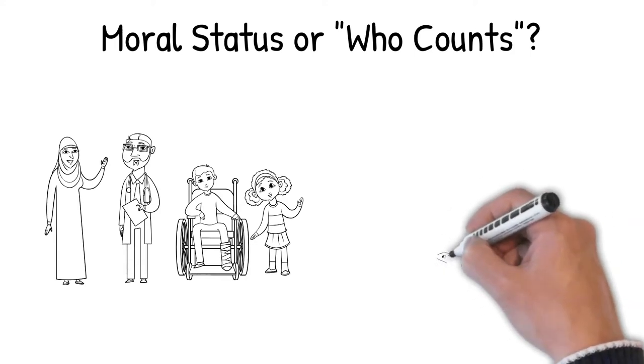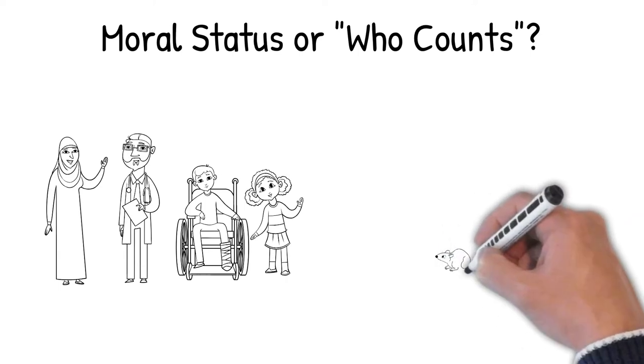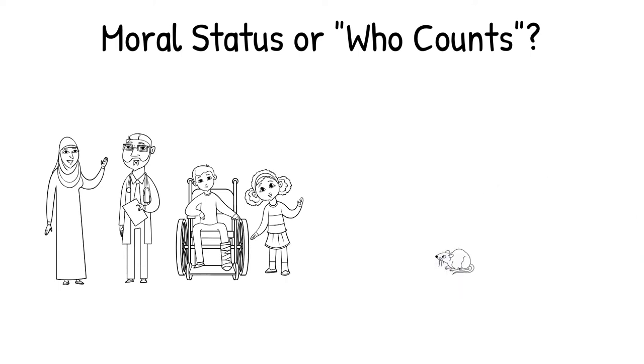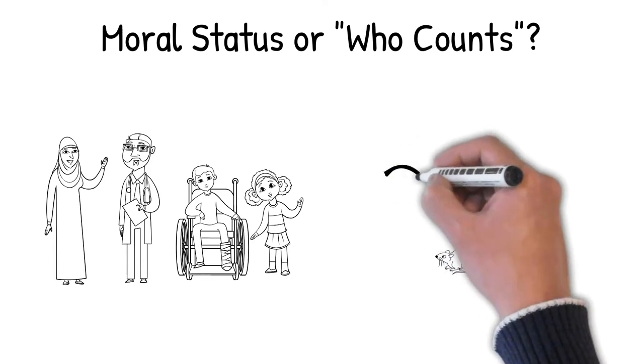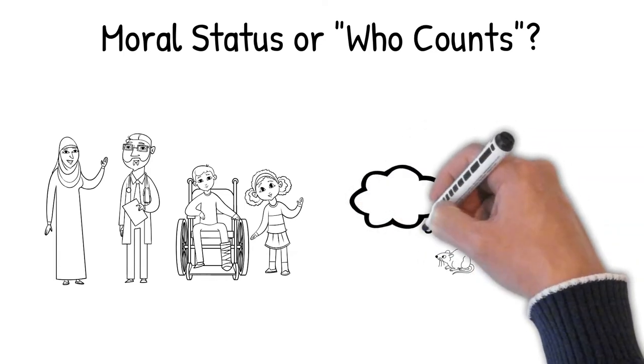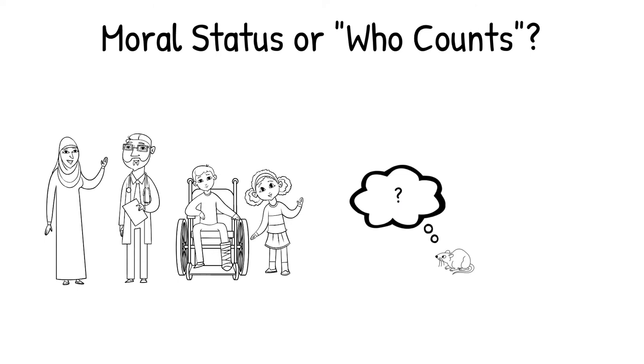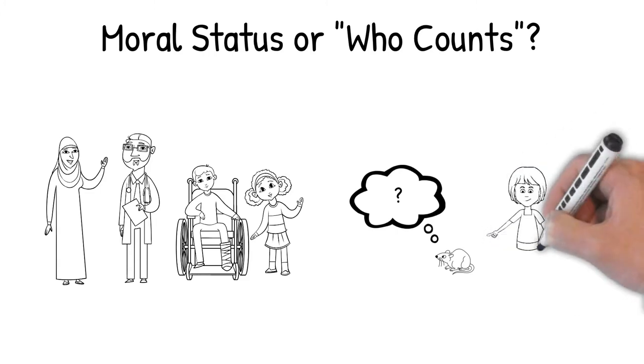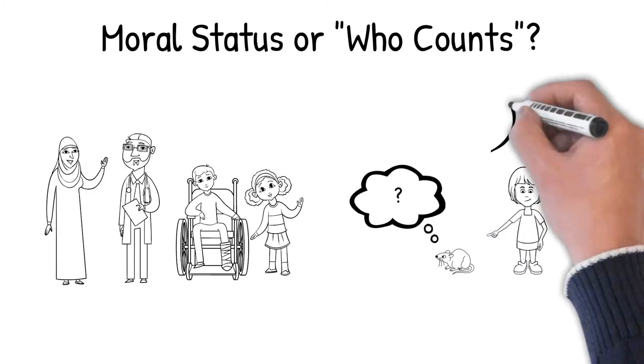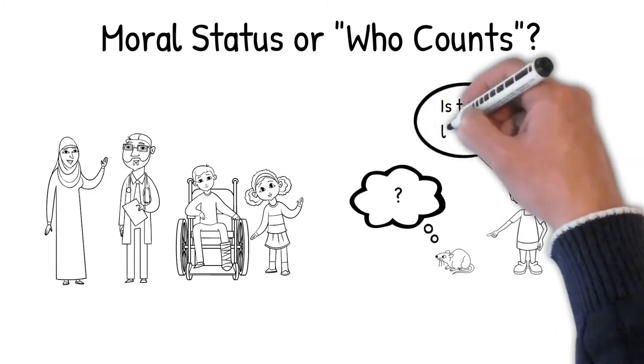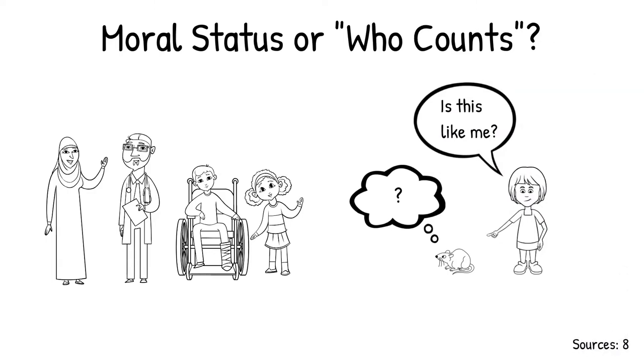But most philosophers and ethicists would probably agree that an entity like a mouse would not have the same moral status as a human being. This might be because a mouse doesn't have the same level of cognitive abilities, self-awareness, or just because it's a different species from a human being. Whatever the reason, we often treat entities like mice differently, and give them different moral considerations.